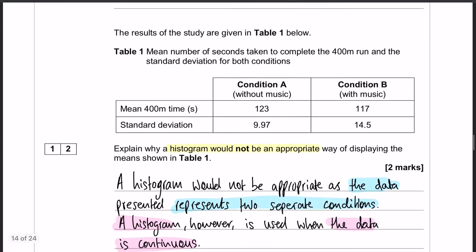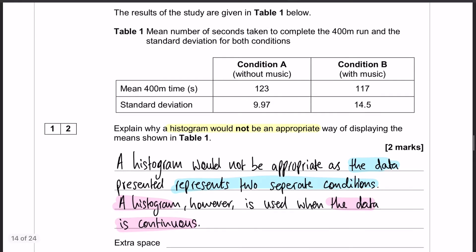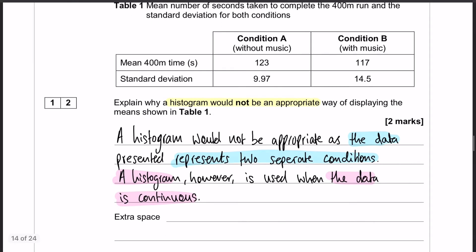Finally, we have the answer to question number 12. The reason a histogram would not be appropriate is because you only use a histogram when you are using continuous data. However, the data that is being presented to us in the table is actually two separate conditions, and therefore a bar chart would be the correct graphical display to use here.